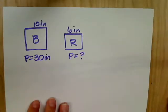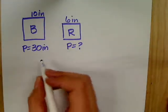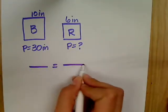Remember, we're setting up a proportion. I have three pieces of information that I need, and one thing that's missing.